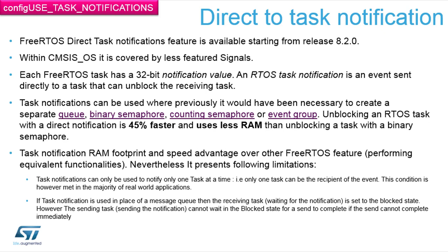Another method of synchronization of the tasks is a direct-to-task notification. This feature was implemented from the FreeRTOS release in version 8.2, and in CMSIS OS it's covered by a feature called signals. The task notification is much faster than other synchronization methods, and it allows you to send the notification, a binary value, to tasks defined by a task ID.